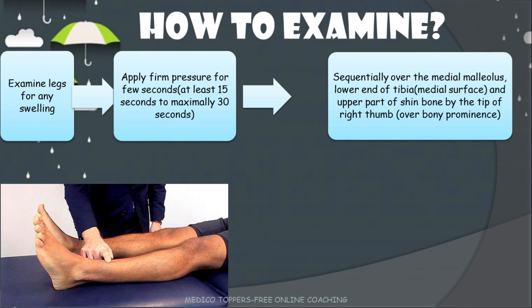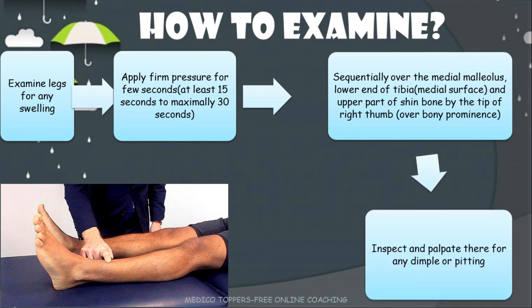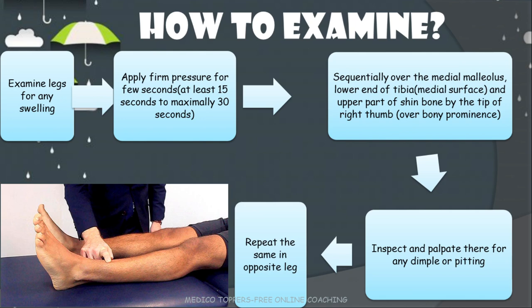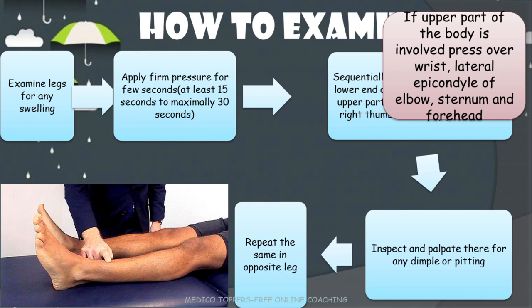If we are guessing the patient is having edema in the lower limb, first we have to apply pressure over the medial malleolus, then on the lower end of the tibia mainly on the medial side, and the upper part of the shin bone by the tip of the right thumb — mainly bony prominences, that you have to remember. We have to examine in a sequential way from above downwards, then inspect and palpate whether there is any dimple or pitting to find out the edema, and repeat the same procedure on the opposite leg.